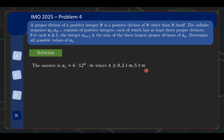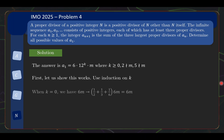But with the motivation we saw earlier — 2 squared times 3 and 5 doesn't divide m — this kind of makes sense. So let's prove this answer formally. First we can show that this works using induction on k, which is very straightforward.